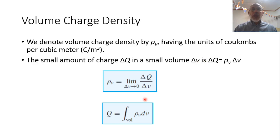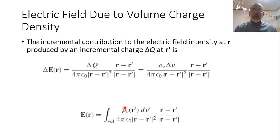In other words, if we have volume charge density in a specific volume, the total charge inside this volume can be represented as the integration over this volume of ρv dV, where ρv is the volume charge density and dV is the differential volume element.